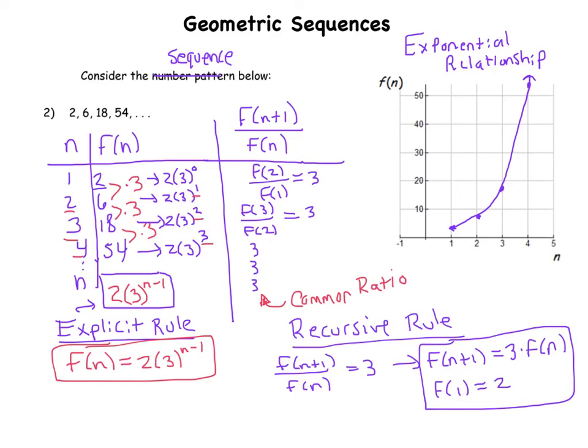So I have my explicit rule that gets me from input to output, I got my recursive rule which gets me from output to output, and I'm all set to go with a geometric sequence. And on the next page we'll define formally what a geometric sequence is.